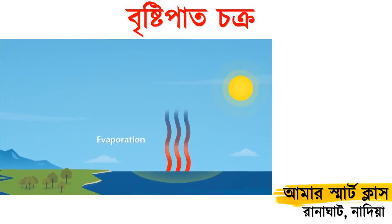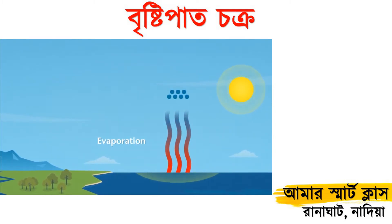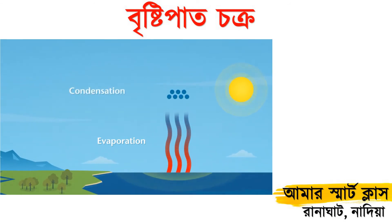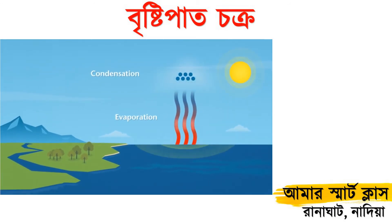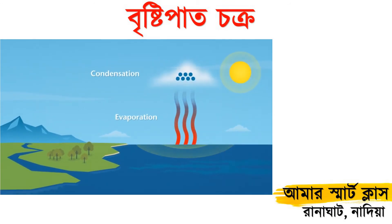So in the sky, the water vapor cools and changes back into tiny water droplets. This change is called condensation and is the opposite of evaporation. Clouds are made up of tiny water droplets, so when condensation occurs in the sky, clouds form and grow.